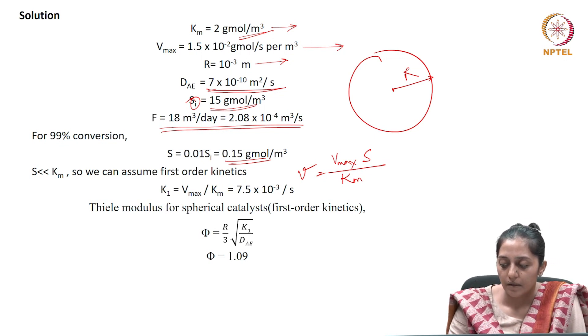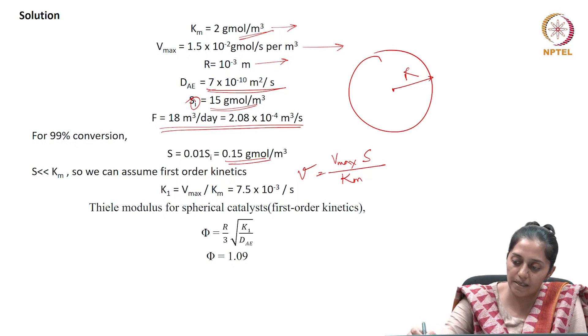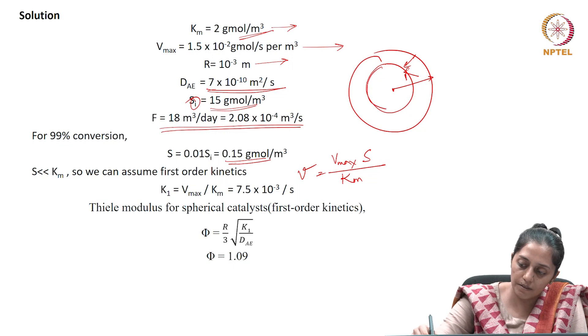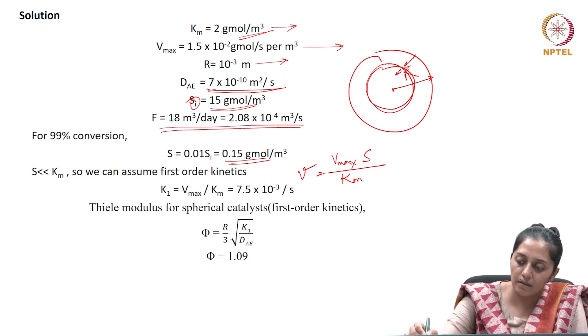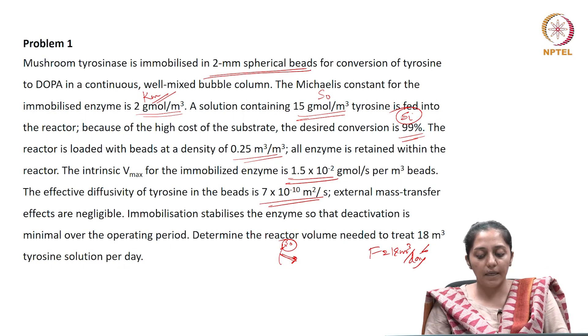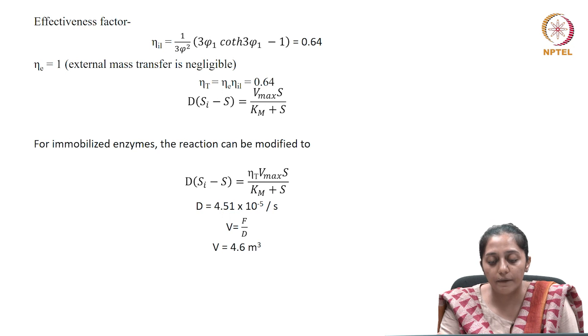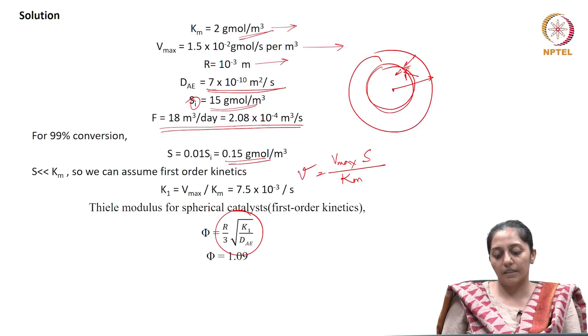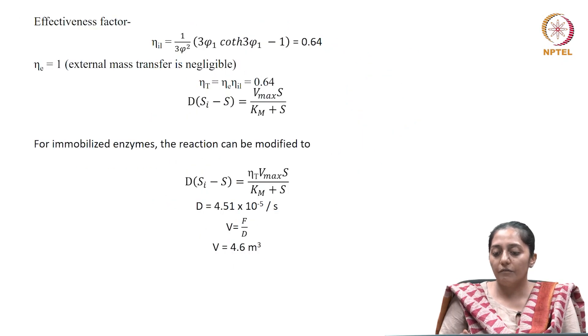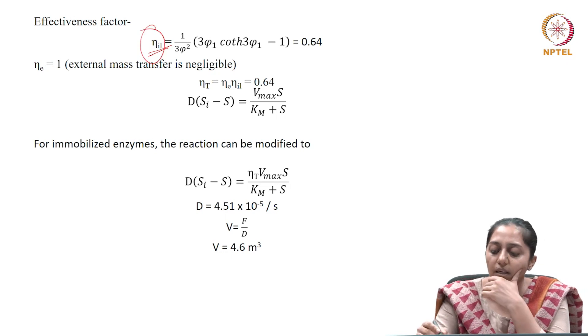For an immobilized system with external mass transfer absent and only internal mass transfer present, we perform a mass balance in a spherical shell. To find the reactor volume, we must first determine the effect of mass transfer limitation using the effectiveness factor.